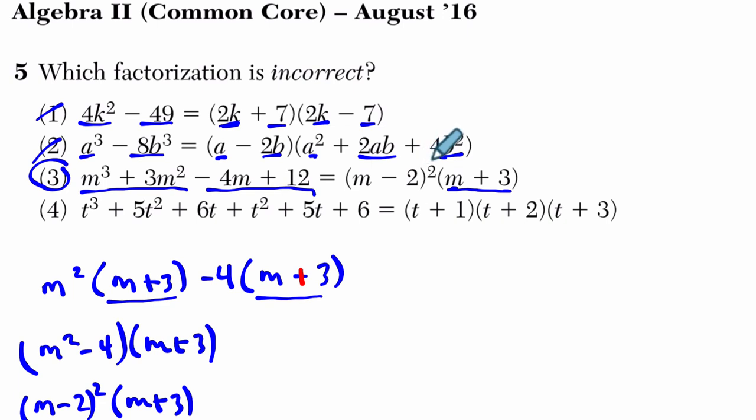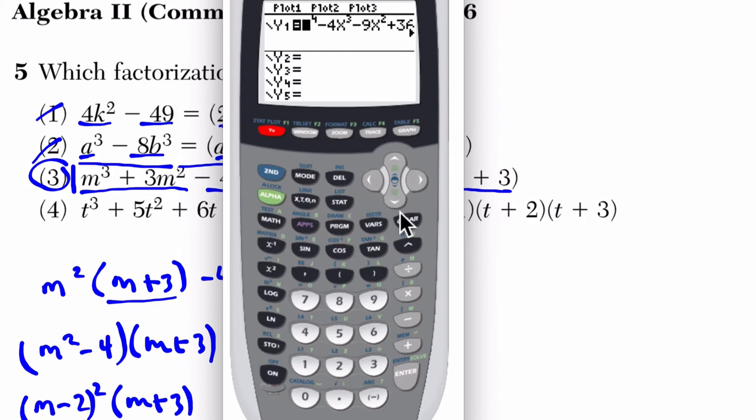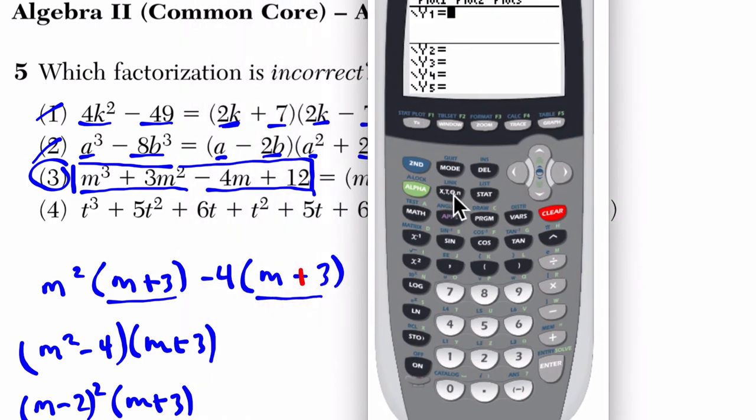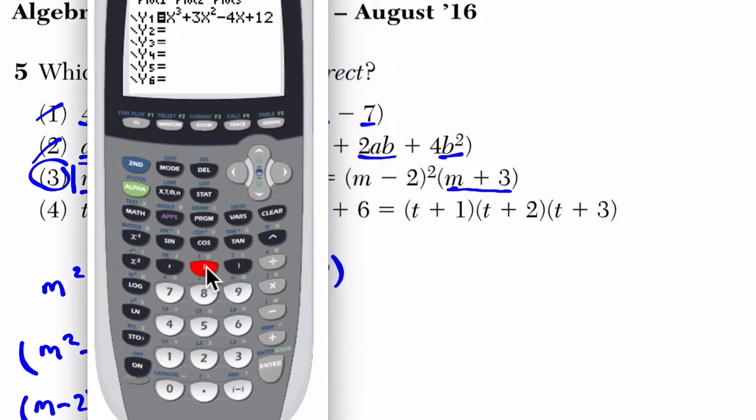Now, if we're not feeling confident about that, what you could do on the graphing calculator is graph this under y equals. Right? We have, so y equals, let me just show you what I mean. Here, if you have y equals, clear it off. You have x cubed and then plus 3x squared minus 4x plus 12 and then graph your second equation. See if they're equal. We have x minus 2 squared and then parentheses x plus 3. So we're just going to graph this out and let's see what happens.